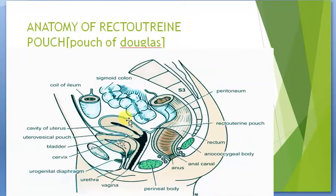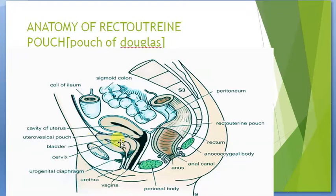The pouch present between the uterus and the rectum is named the recto-uterine pouch, because it is present between the rectum and the uterus. The other pouch, present between the uterus and the urinary bladder — since we also call the urinary bladder the vesicle — is called the utero-vesicular pouch. This recto-uterine pouch in the female is most important because all the fluid of the peritoneal cavity deposits into this pouch.